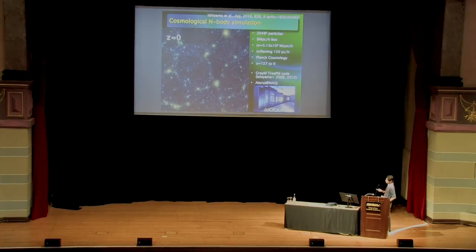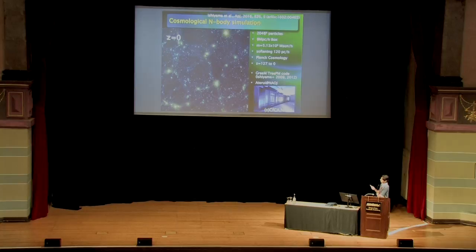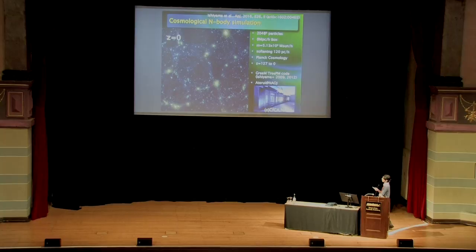This is our cosmological N-body simulation snapshot at redshift zero. We only simulated dark matter, so this is a dark matter map. Previous studies predicting the distribution of low-mass Pop 3 survivors suffered from poor simulation mass resolution. Some studies used semi-analytic models, but these do not provide the spatial distribution of mini-halos. Our simulation provides the spatial distribution of mini-halos with sufficient mass resolution for the first time.